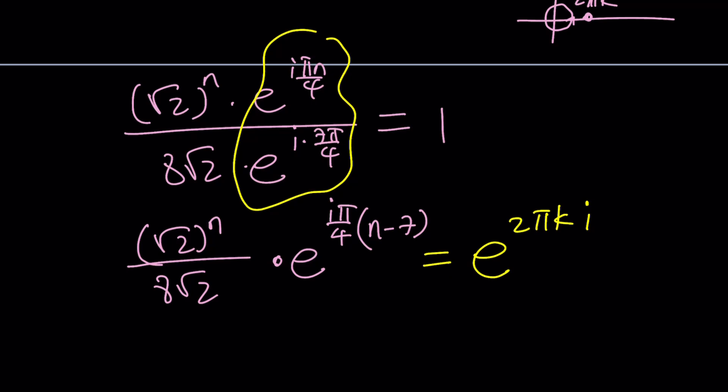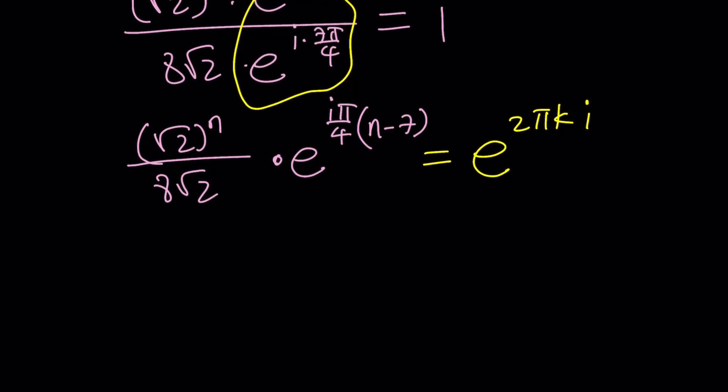When you ln both sides, what's going to happen? When you ln both sides, the powers are going to be going down. So we're going to put a huge ln here and a smaller ln here. No big deal. Same idea.